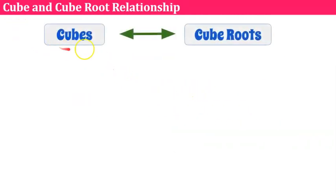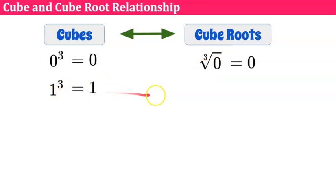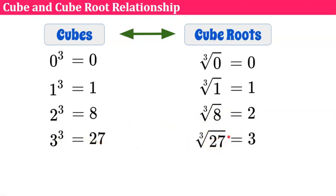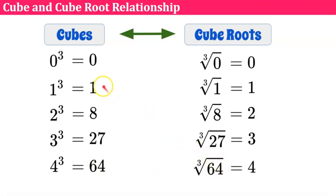The cube and cube root relationship — we just talked about cubes and cube roots having that inverse relationship. Here are some perfect cubes: zero cubed is zero, so the cube root of zero is zero. One cubed is one, the cube root of one is one. Two cubed is eight, so the cube root of eight is two. Three cubed is 27, the cube root of 27 is three. Four cubed is 64, and the cube root of 64 is four. I encourage students to write these in their notebook, probably up to 15 or 20, to recognize perfect cube values.